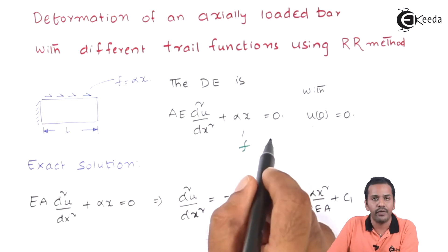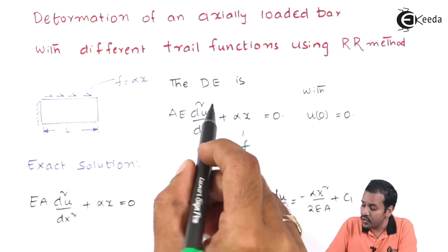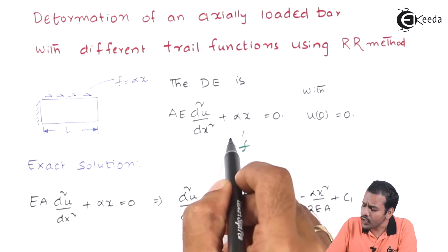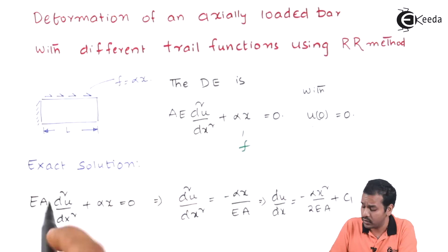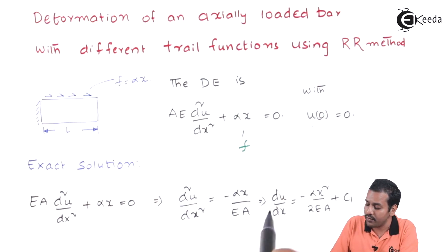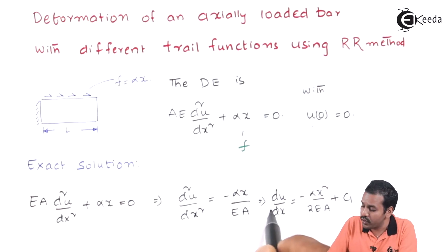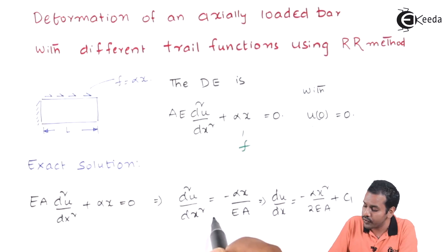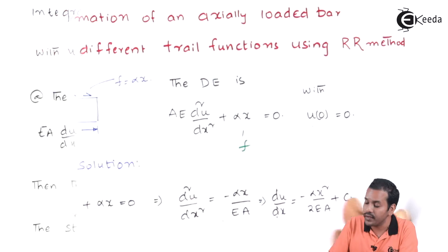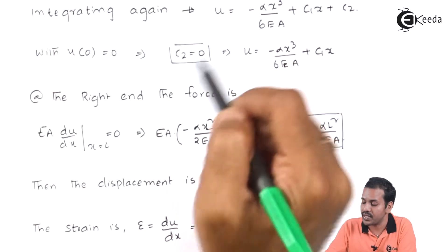Can we find the exact solution for this equation? Obviously we can. This is a second-order ordinary differential equation: EA d²u/dx² + alpha x = 0. So d²u/dx² equals minus alpha x divided by EA. Integrating once: du/dx = minus alpha x² divided by 2EA plus C1. Integrating again: u = minus alpha x³ divided by 6EA plus C1 x plus C2.